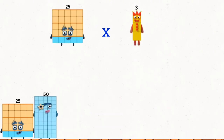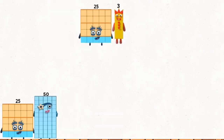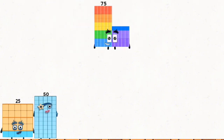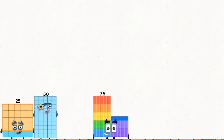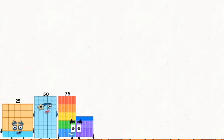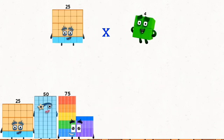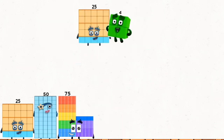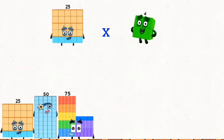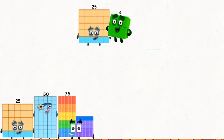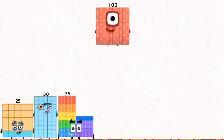25 times 3 equals 75. 25 times 4 equals 100.